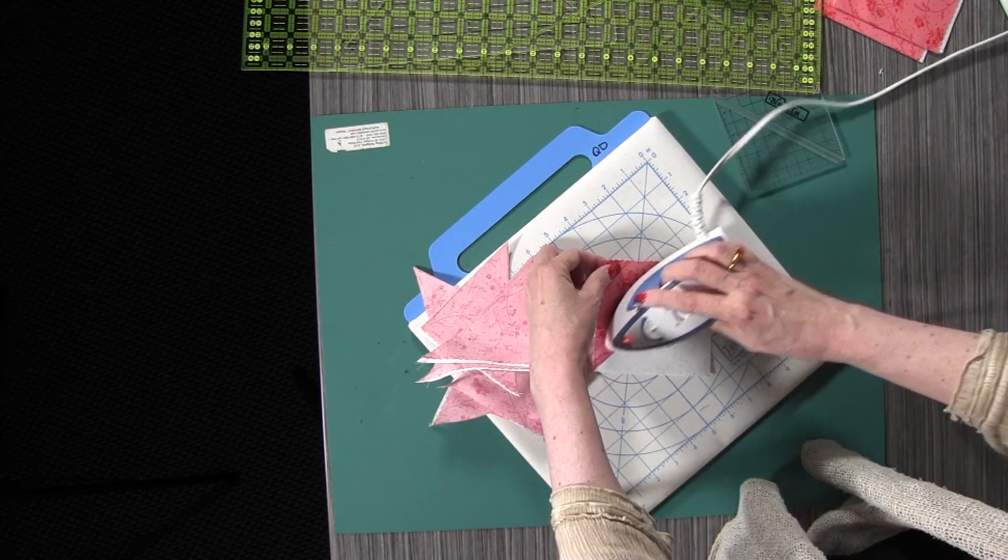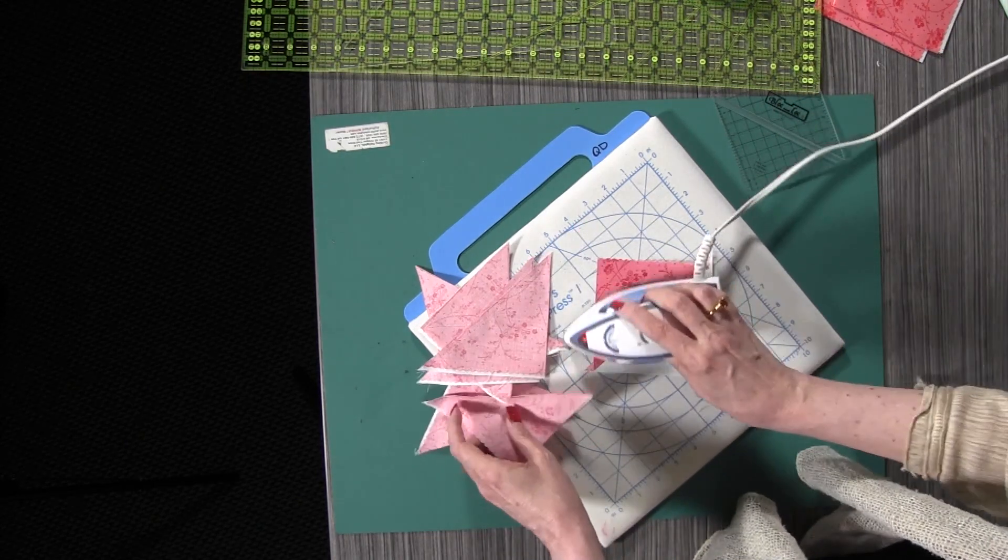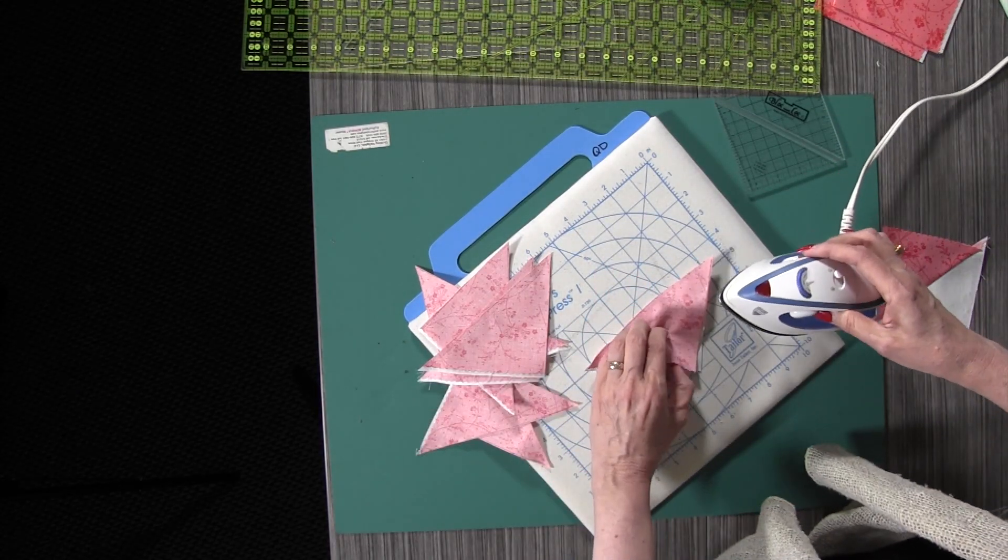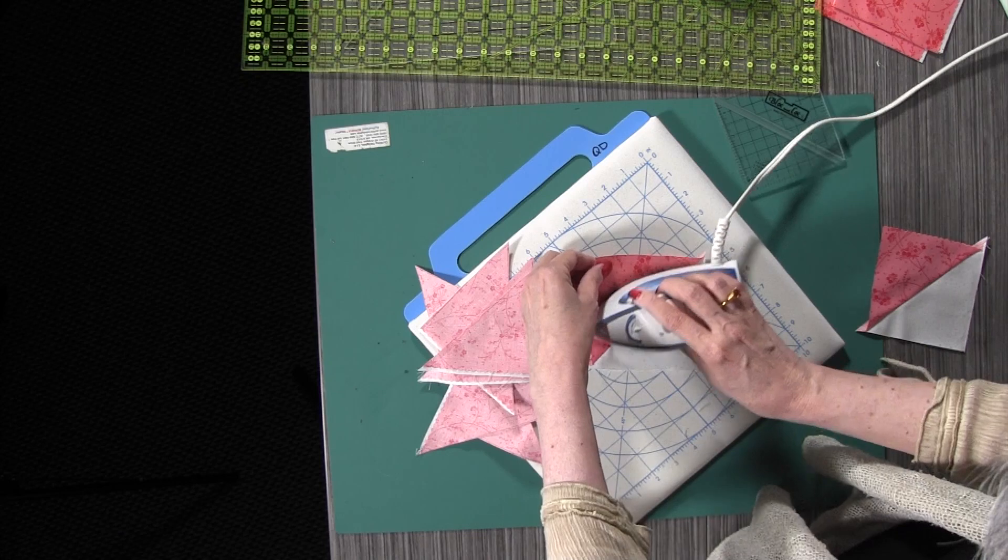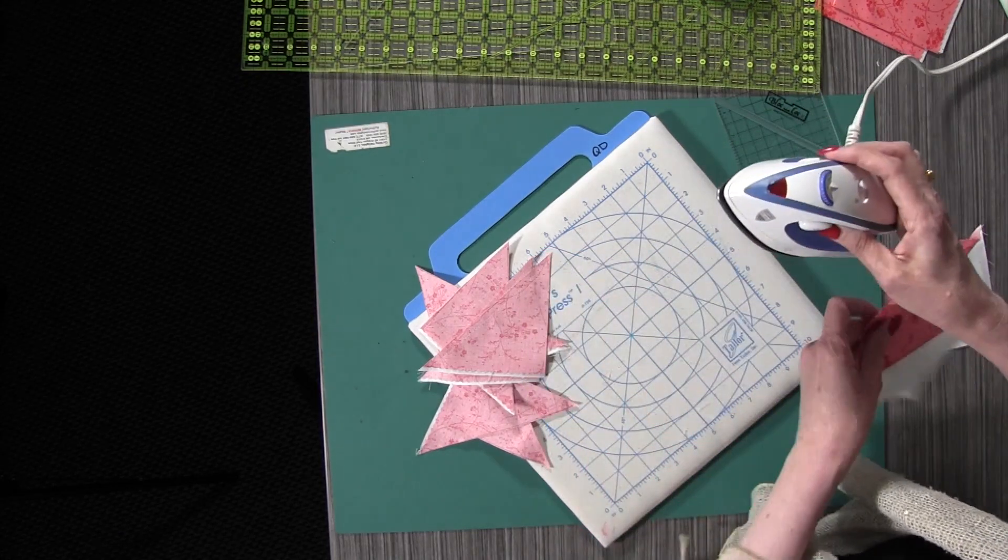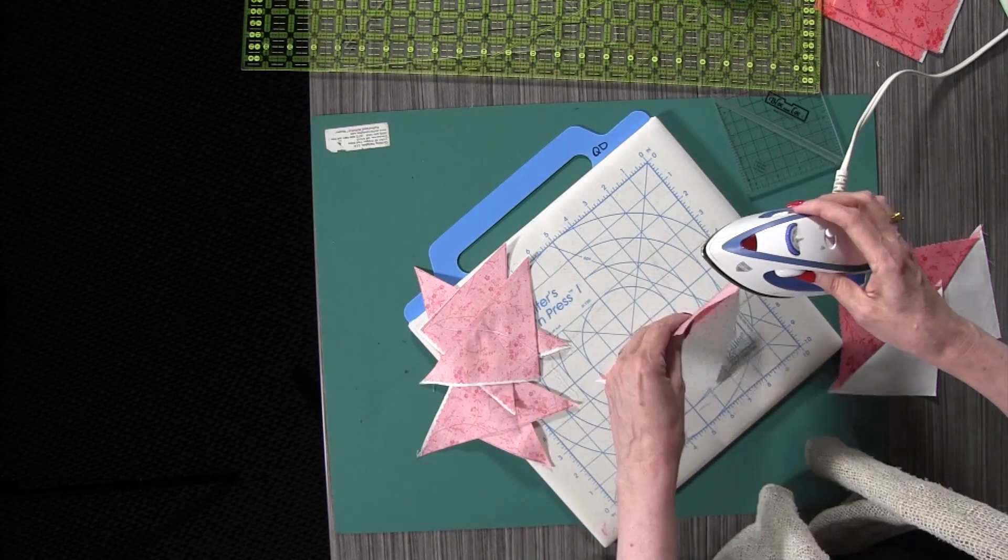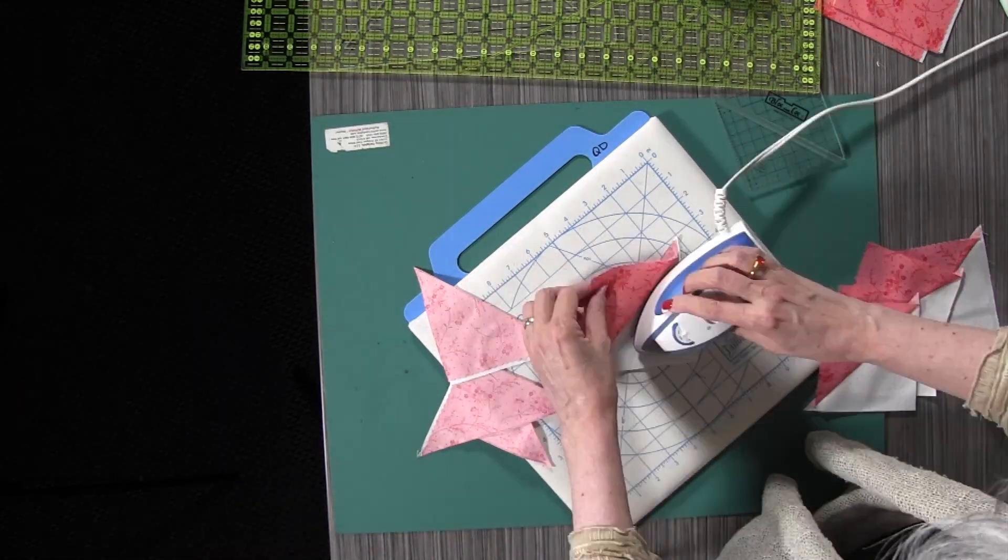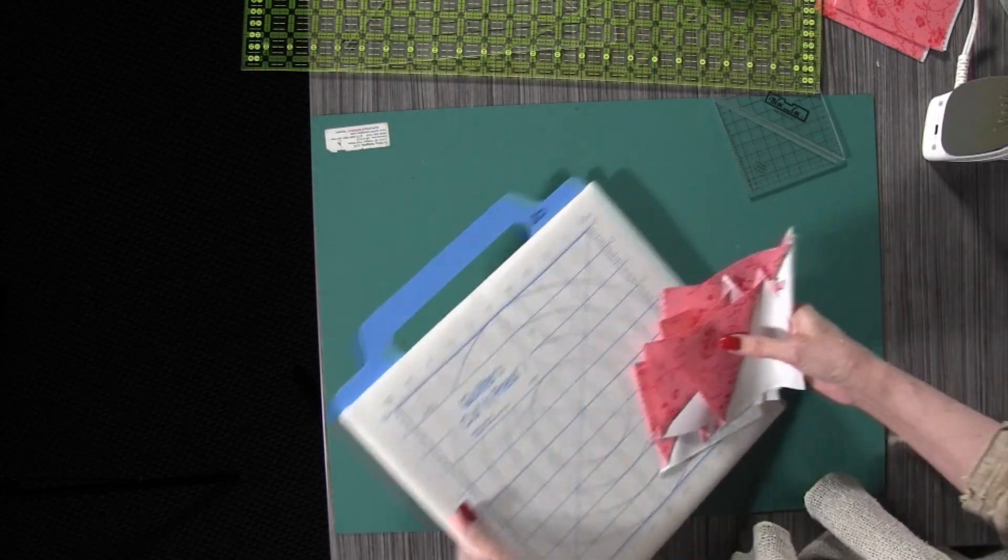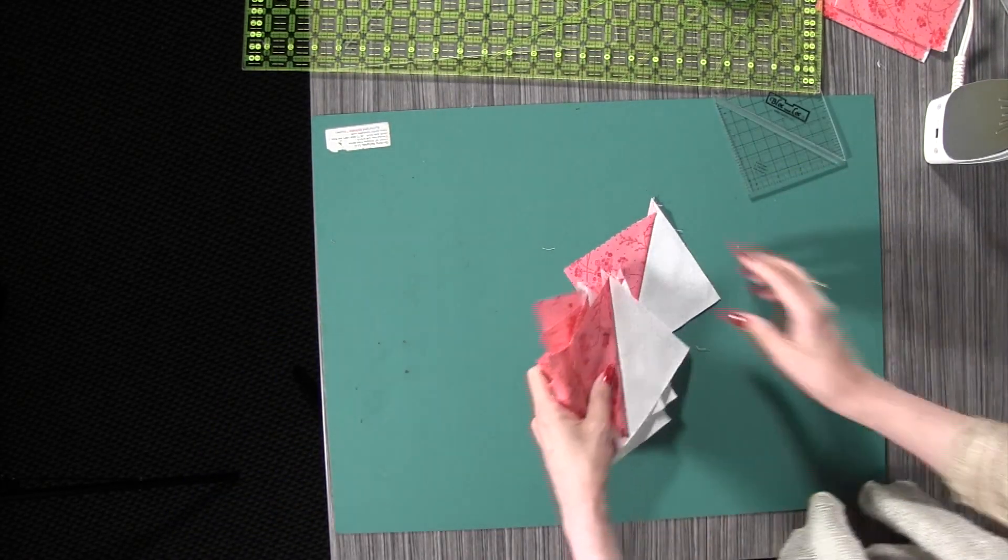I have my little iron and my little pressing mat which I really love. And I'm going to press these to the dark side, the darker fabric. It doesn't take any time at all. And look there, we've got eight of these pressed and ready to go.